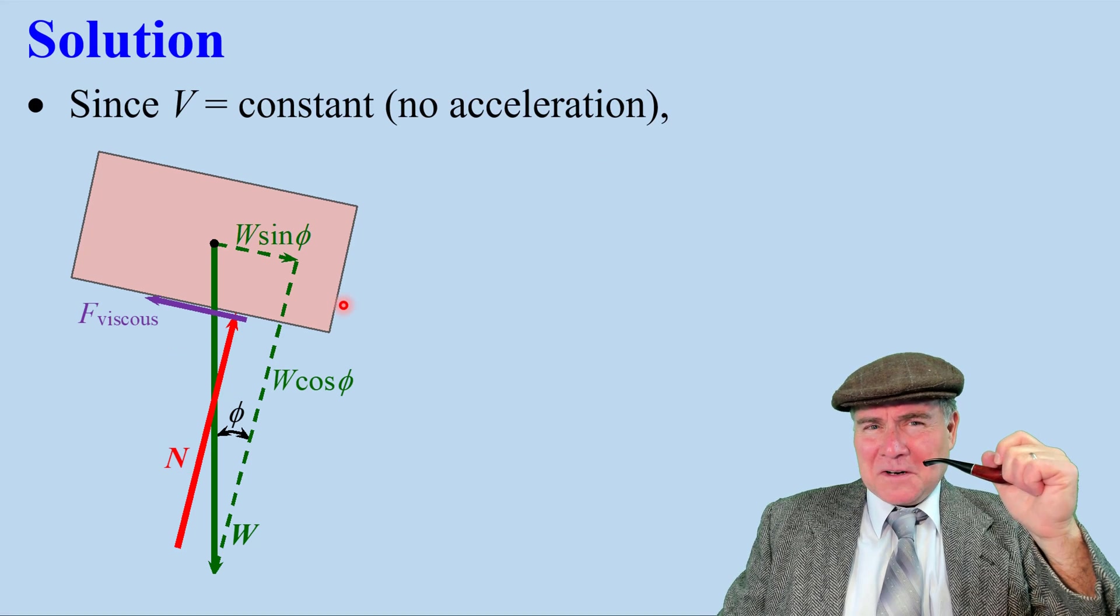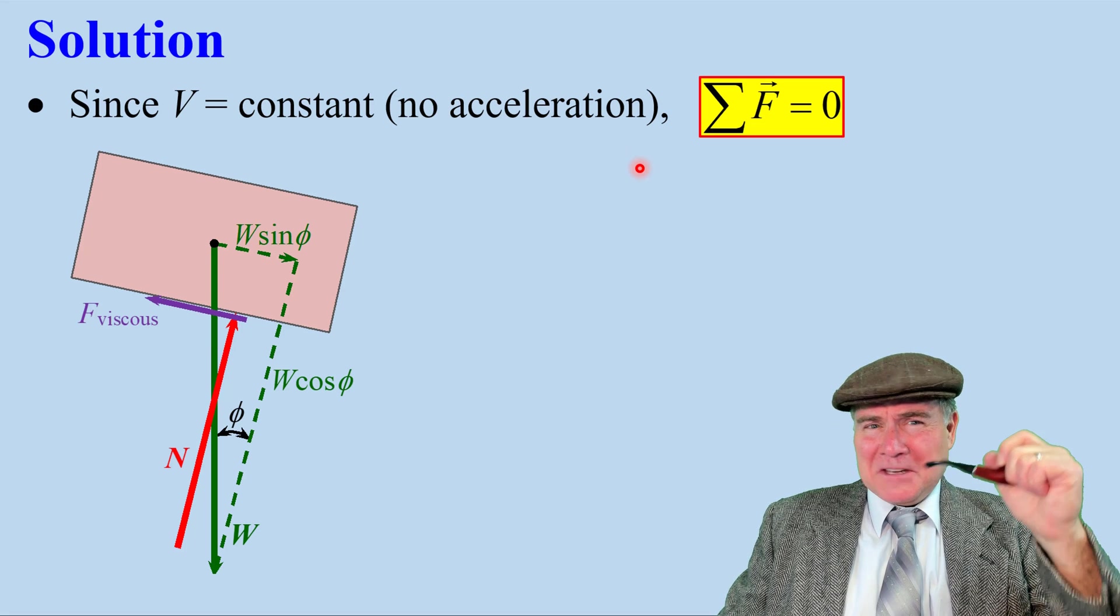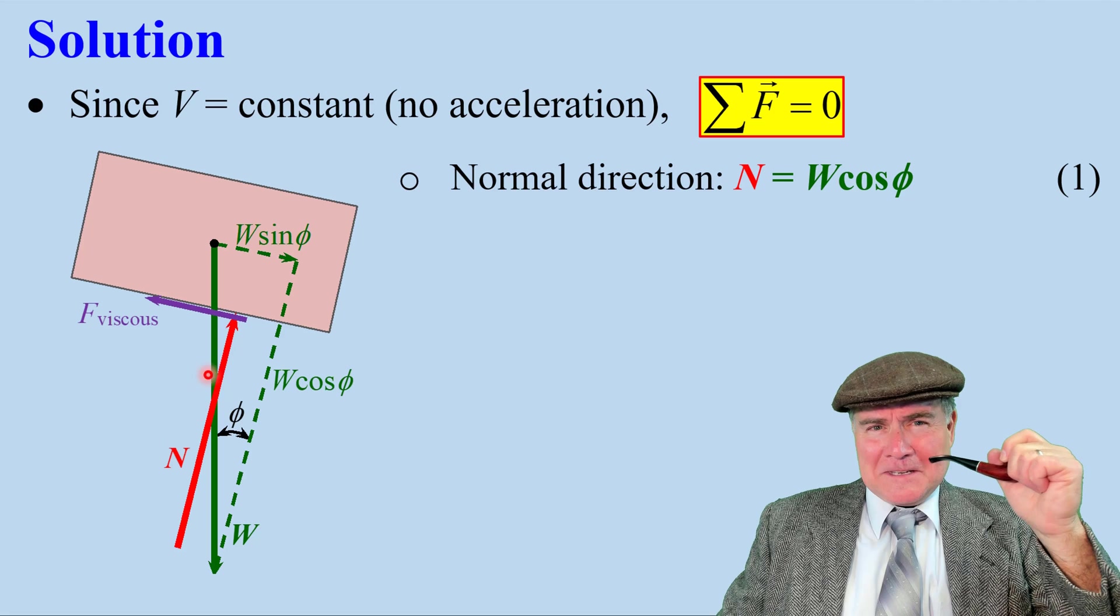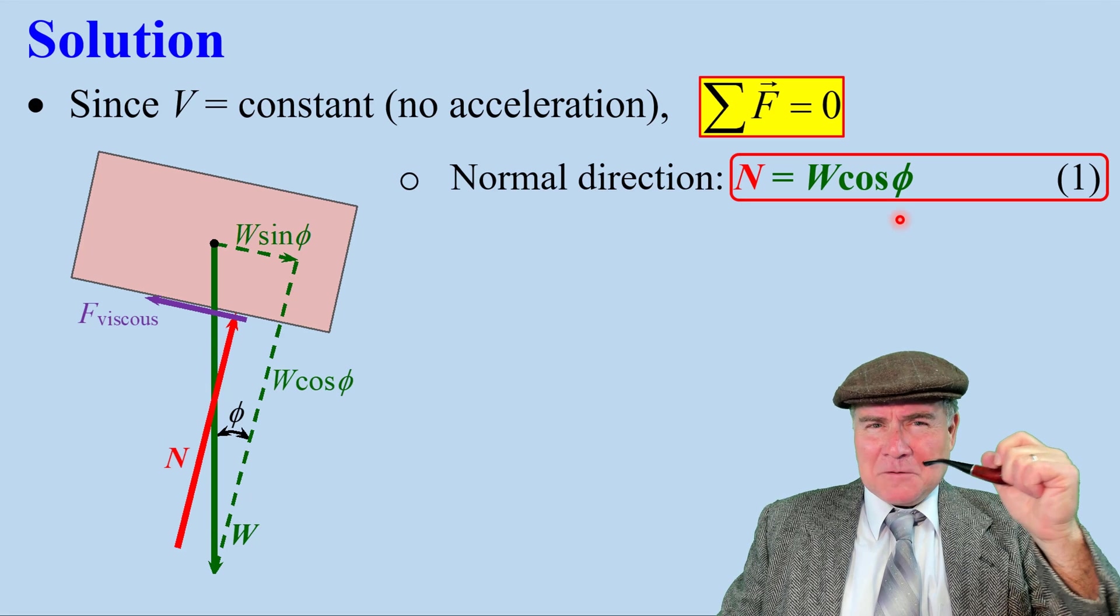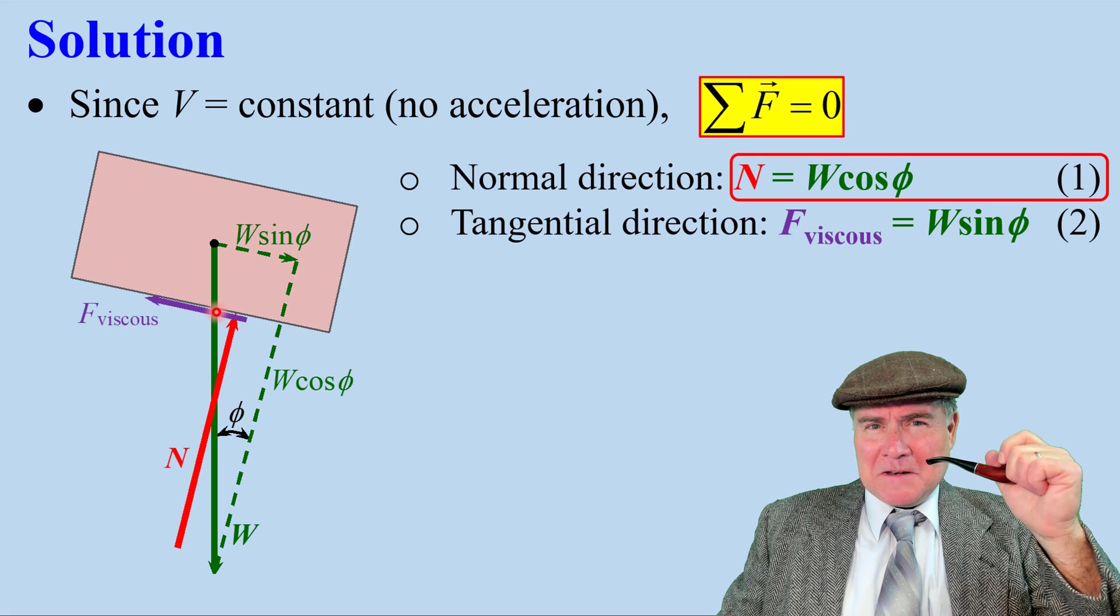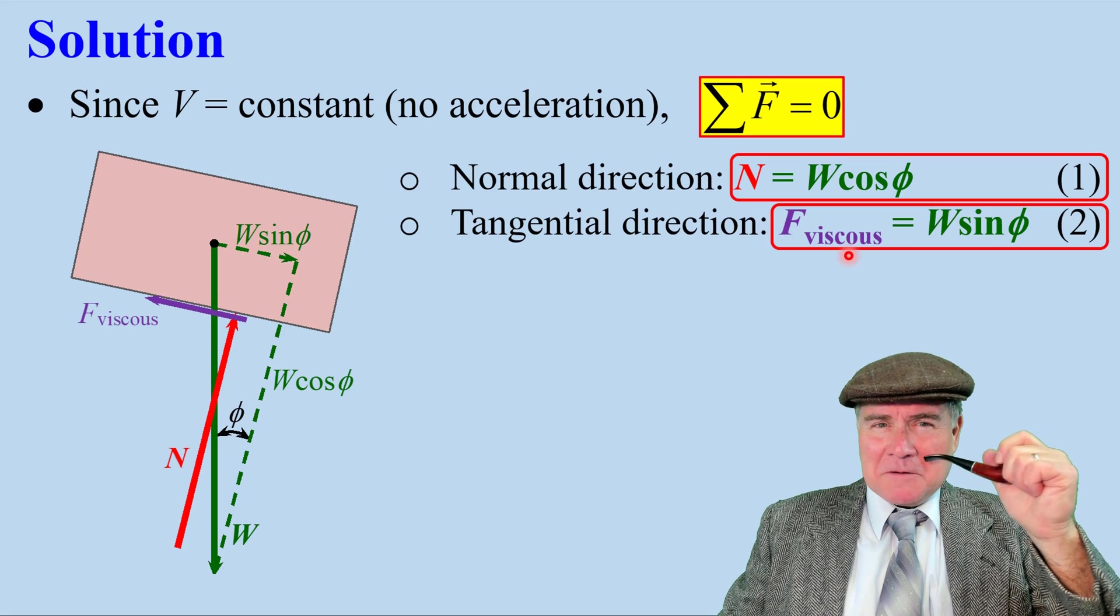Since v is constant, there's no acceleration. Newton's second law is that sigma F has to be zero. In the normal direction, this N must be balanced by W cosine phi. Let's call this equation 1. In the tangential direction, the viscous force must be balanced by W sine phi. We'll call that equation 2.